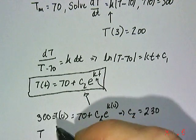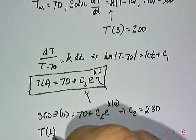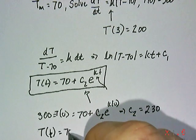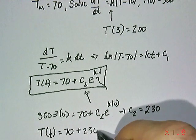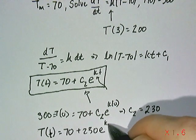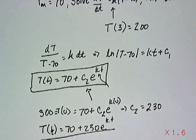So at that point, we now know that the cooling temperature behaves this way. It's 70 plus 230 degrees times e to some constant kt.